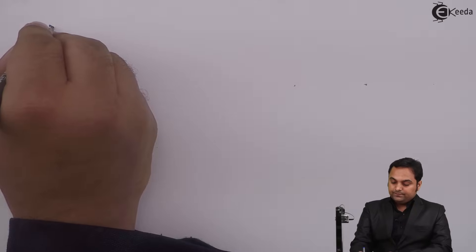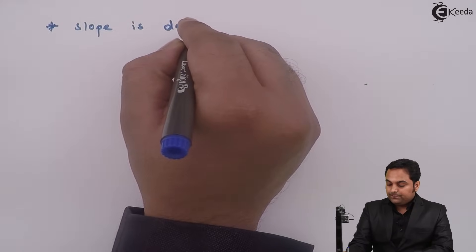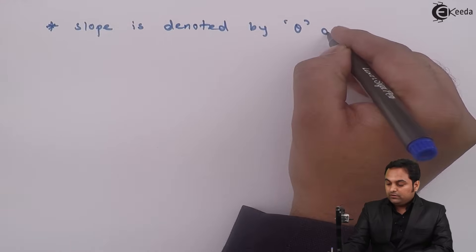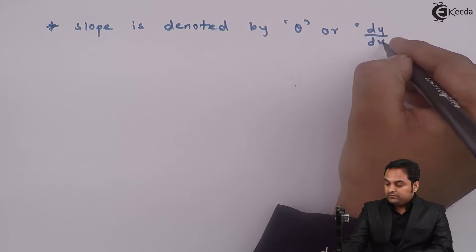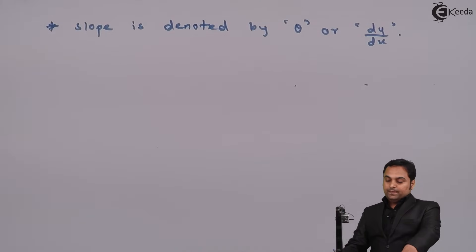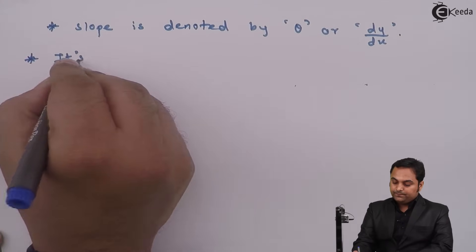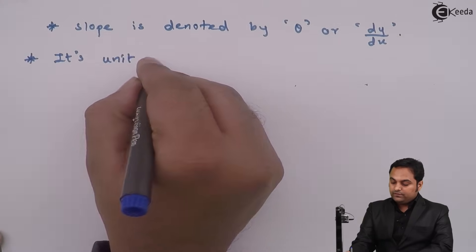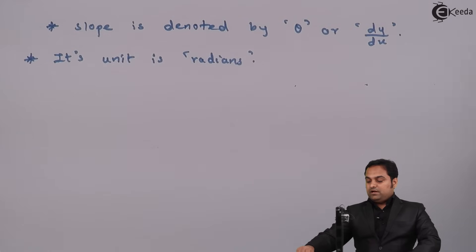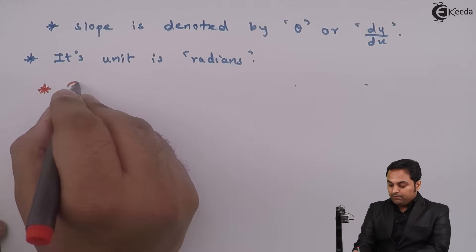Slope is denoted by angle theta, or it is simply written as dy/dx. Its unit is radians. Next let us see the boundary conditions.